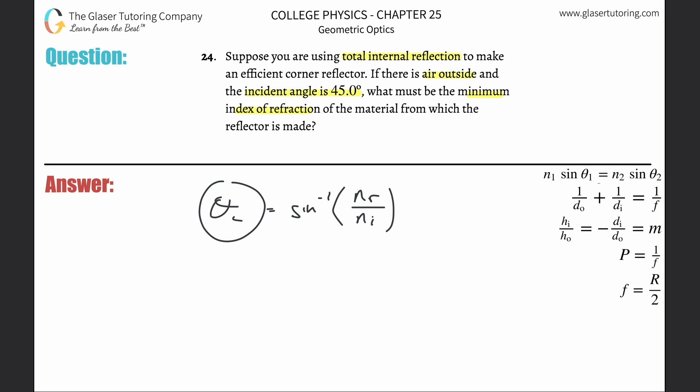This critical angle is known as the incident angle which creates total internal reflection. Again, number 20 will explain it. So this angle here is 45 degrees. This is the critical angle because this is the angle giving rise to the total internal reflection.